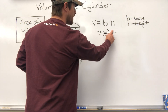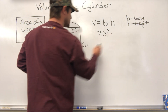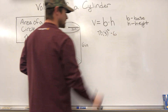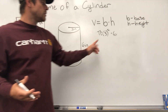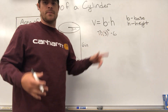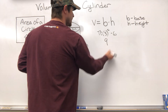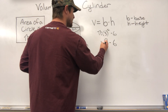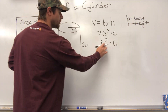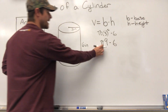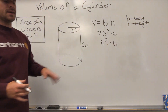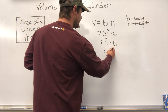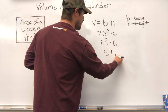Then we're going to multiply that by our height. In this case our height is how tall the cylinder is, so six inches. All you need to do is take three, square it — three times three gives you nine. Then take that nine and multiply it by six and pi. All three of these need to be multiplied together: pi, nine, and six. Nine times six comes out to 54, and we still need to multiply by pi.